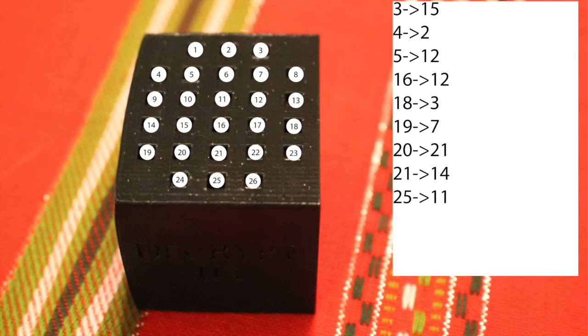The fact that there are 26 holes tells us that we should be interpreting these as letters. If we do so, we get a transformation between letters. C goes to O, D goes to B, etc.